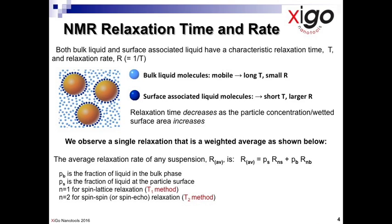The relaxation time decreases as the particle concentration and/or the wetted surface area increases. A suspension of particles in a liquid with a large wetted surface area — for example, a nanoparticulate pigment — will have a smaller relaxation time than a suspension with a small wetted surface area, because there will be more liquid molecules associated with the particle surface. In general, the higher the solids loading, the greater is the measurement precision. Since a vast number of industrially useful suspensions are manufactured or used as concentrates, Exegos measurements can prove very useful as they can be made using undiluted suspensions.